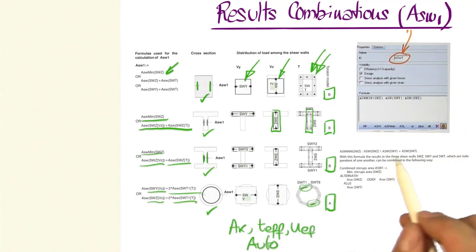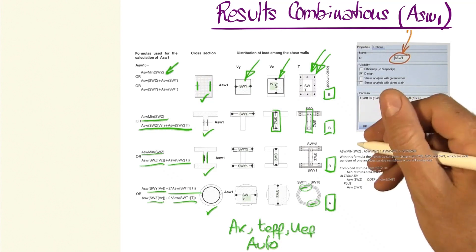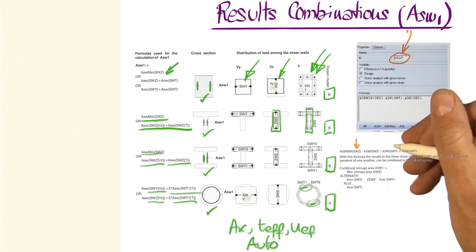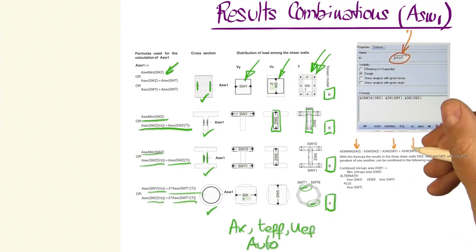In this example, if we had three shear walls, one in Z, one in Y, and one for torsion, that were independent of one another, this type of formula could be made.